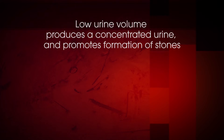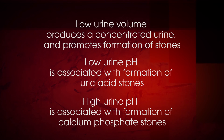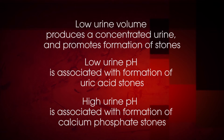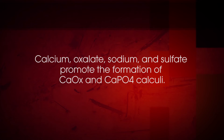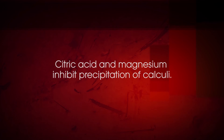Prediction of risk for formation of stones or stone recurrence involves testing urine specimens for components known to promote or inhibit precipitation of particular calculi. Low urine volume produces concentrated urine and promotes stone formation. Low pH is associated with uric acid stones, while high urine pH is often associated with calcium phosphate stones. Calcium, oxalate, sodium, and sulfate promote formation of calcium oxalate and calcium phosphate calculi, whereas citric acid and magnesium inhibit precipitation of calculi.